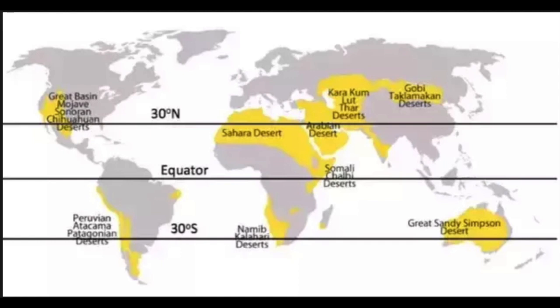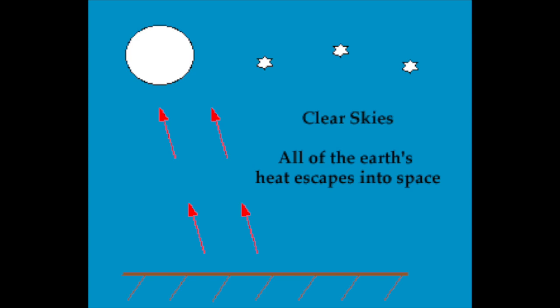Other than their heat and dryness, deserts have one more distinctive characteristic: a drastic difference between daytime and nighttime temperatures. The reason for this is the lack of clouds in the desert. In most places, heat is retained at night because clouds act as a barrier to prevent heat from escaping. In the desert, there are few clouds, which means heat escapes quickly at nighttime, leading to cold nighttime temperatures whilst daytime temperatures are extremely high.